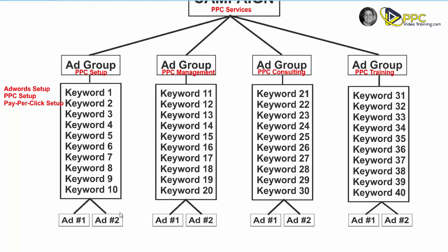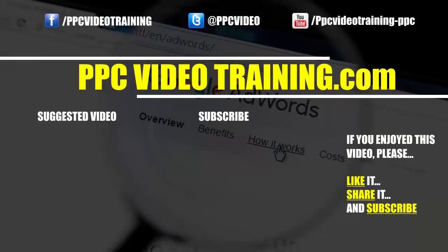We want two ads per ad group because we always want to be testing them. After enough clicks, one of those ads will come out a winner. Once that happens, we take the losing ad, throw it away, and replace it with another ad to see which performs better. You do that for each individual ad group — the appropriate keywords and appropriate ads for each group. And that's what an ad group in Google AdWords is. Hope it helps!